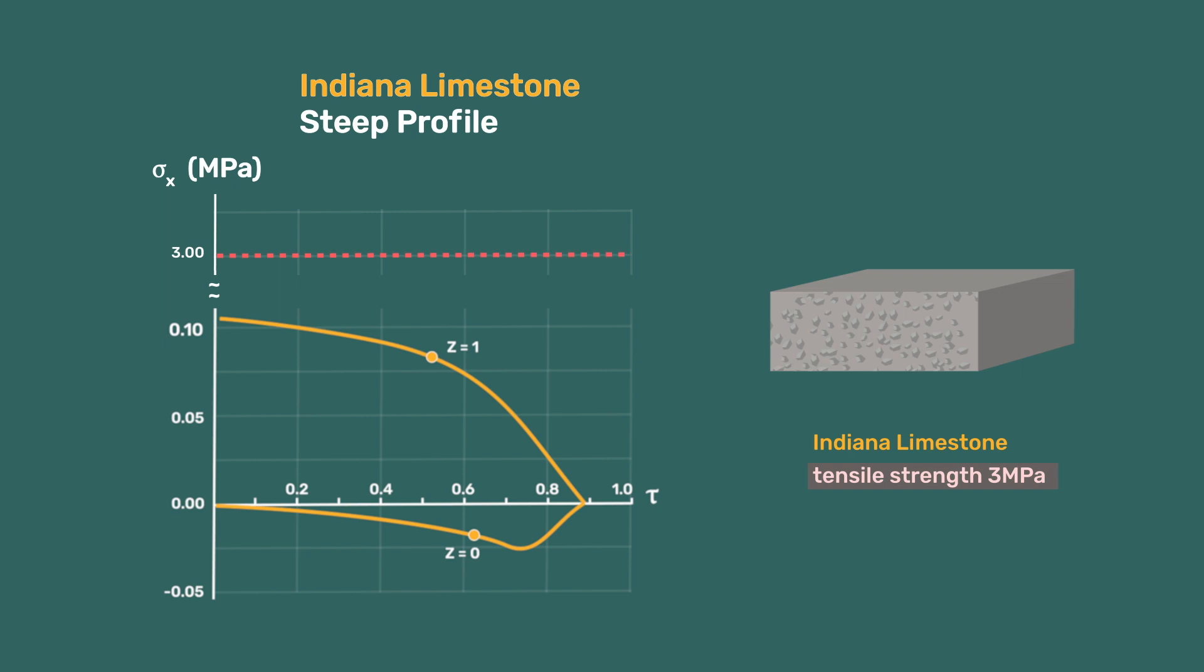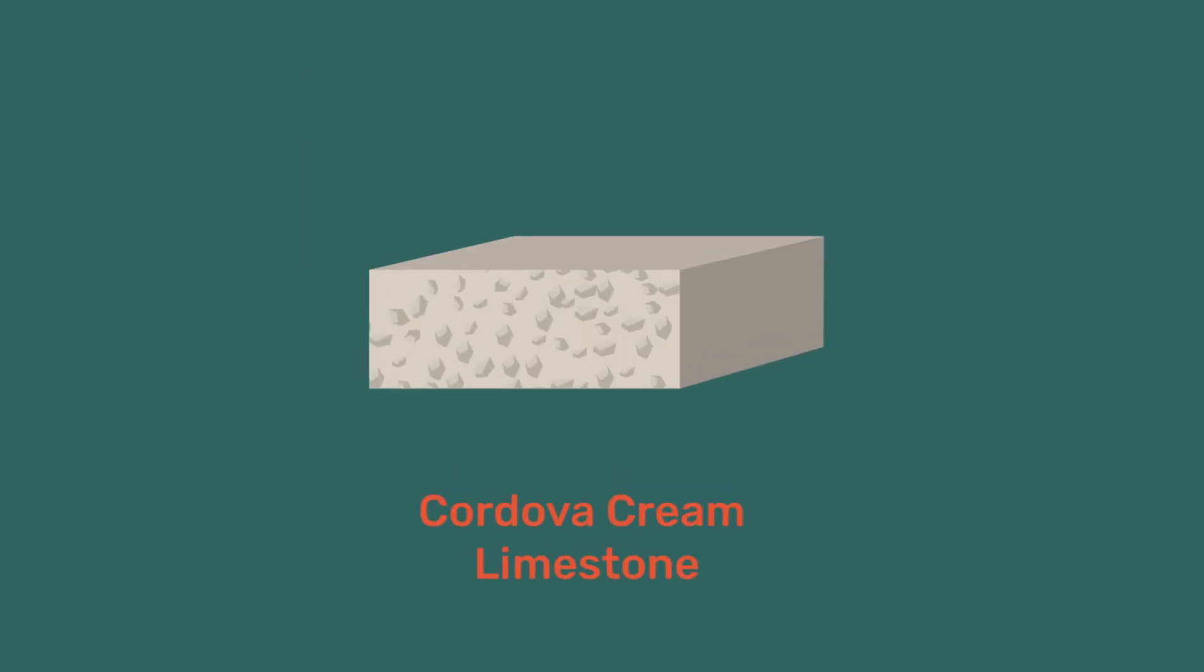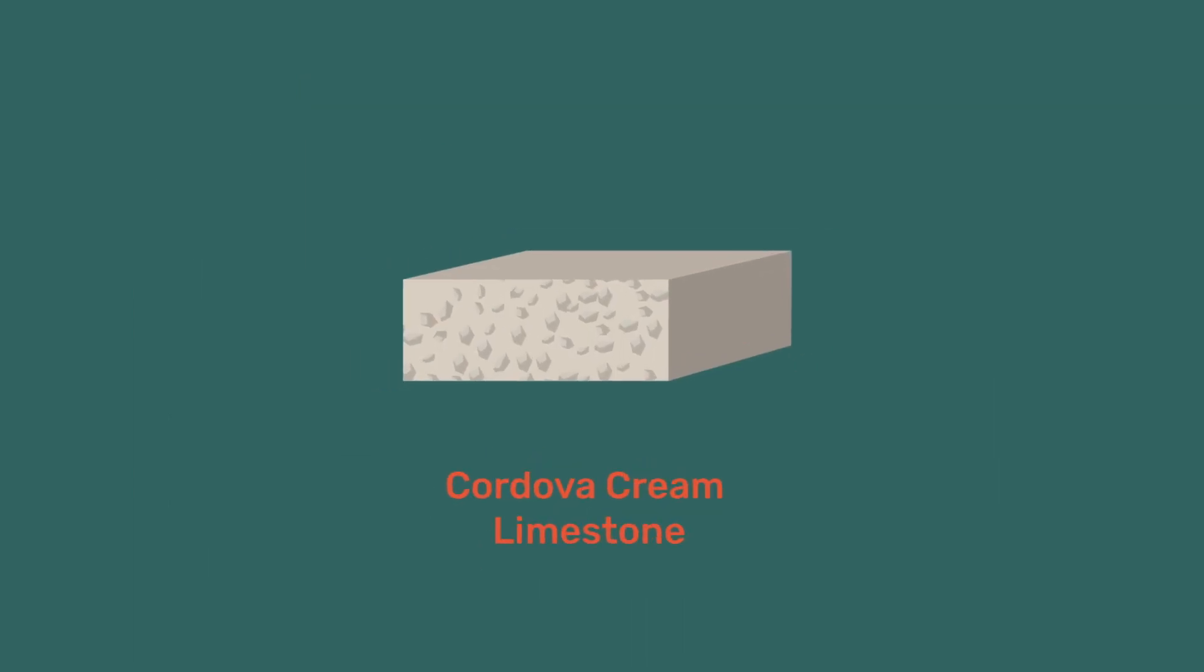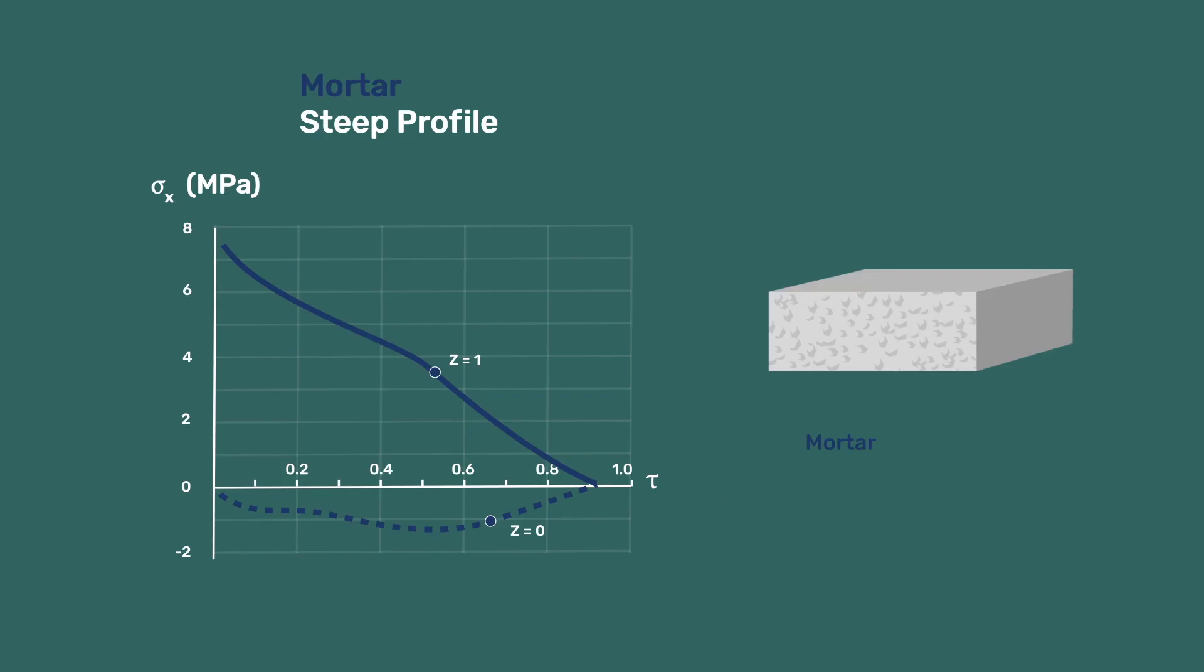A similar result is achieved with Cordova cream limestone. In contrast, if the mortar is subjected to the steep gradient, the tensile stress at the surface is found to be about 7.6 MPa, which is much higher than its tensile strength of about 3 MPa, so surface cracking is expected.